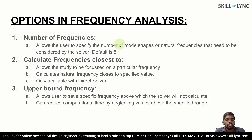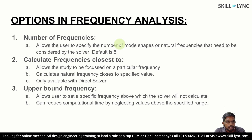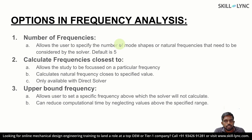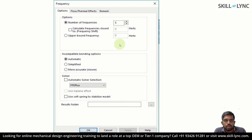SOLIDWORKS provides several options before setting up a frequency analysis. The first is specifying the number of frequencies to look at — restricting the solver to a given set of mode shapes. Second, we can specify the frequency range between which we want to look at different mode shapes. Finally, using the upper bound frequency option, we can fix an upper limit beyond which the solver will not proceed. You navigate to these by right-clicking on the frequency analysis and selecting the options.